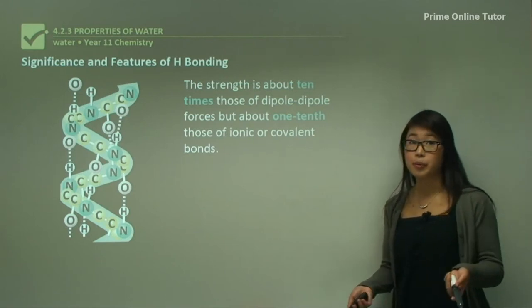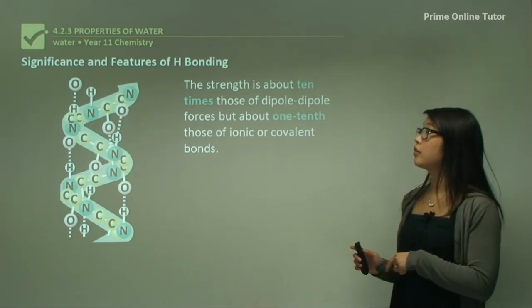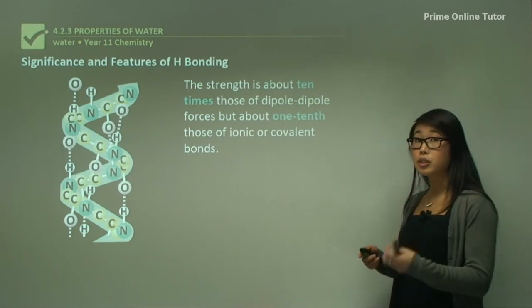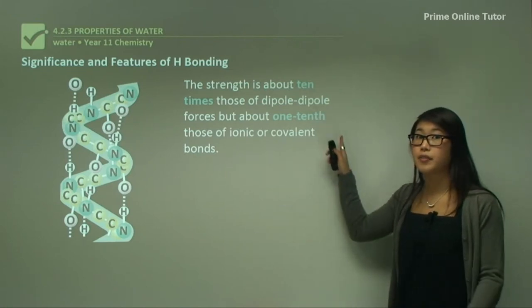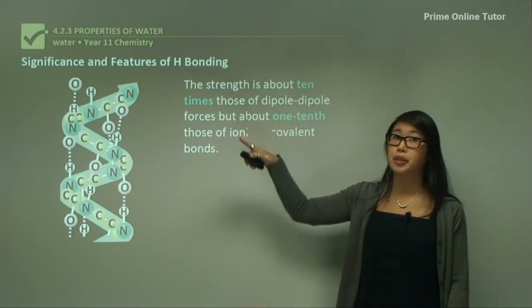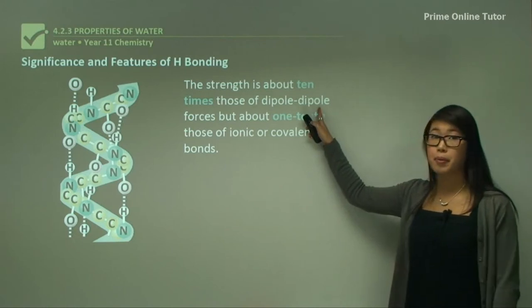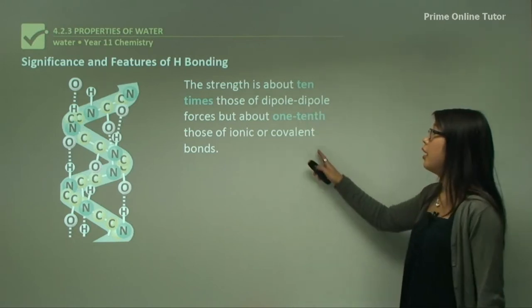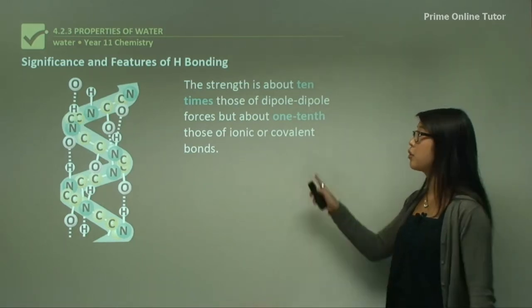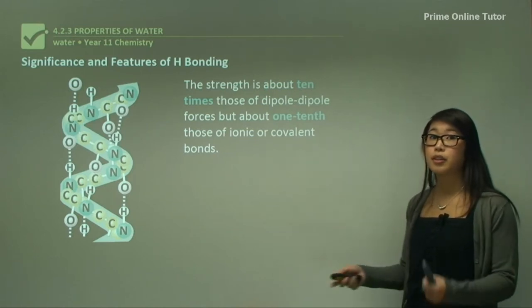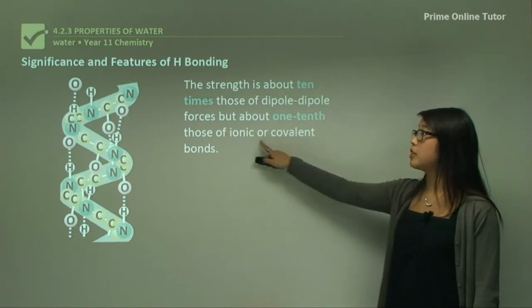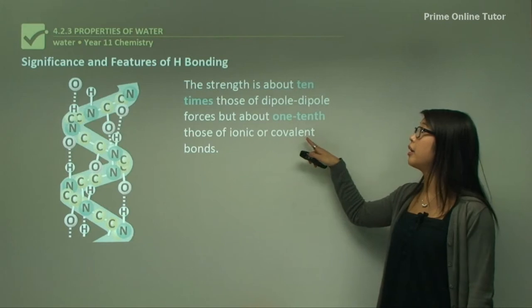Why is it important that we have hydrogen bonding? Firstly, the strength of hydrogen bonds is about 10 times that of a dipole-dipole one, so it's a lot stronger. Dipole-dipole forces are even stronger than dispersion forces. So hydrogen bonding is the strongest of the intermolecular forces, followed by dipole-dipole, then dispersion forces. These hydrogen bonds are about one-tenth of those of ionic or covalent bonds — covalent bonds are inside the molecule and are very strong, and ionic bonds are between oppositely charged atoms. So hydrogen bonds are the strongest intermolecular force, at about one-tenth the strength of ionic or covalent bonds.